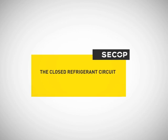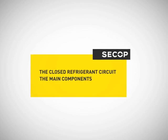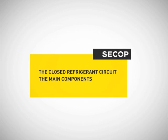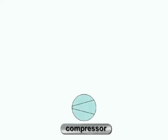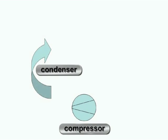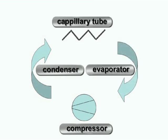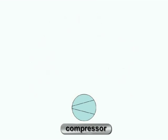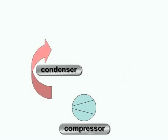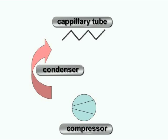The main components of the refrigeration cycle: the compressor, the condenser, the capillary tube, and the evaporator. The gaseous refrigerant is transported to the condenser and compressed to a higher pressure by a compressor. The capillary tube, which makes it possible to build up pressure, is at the end of the condenser.